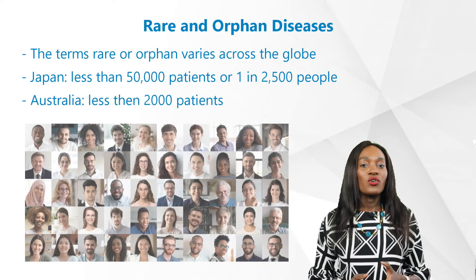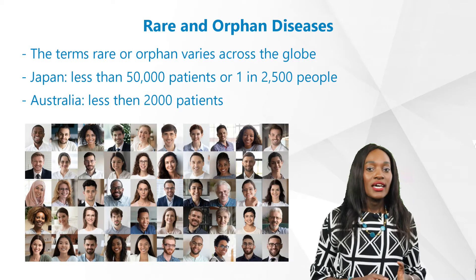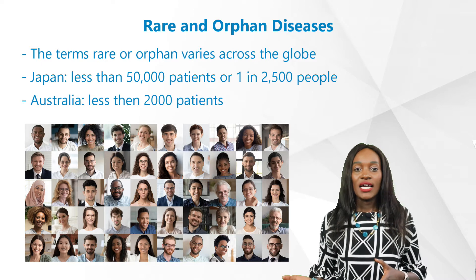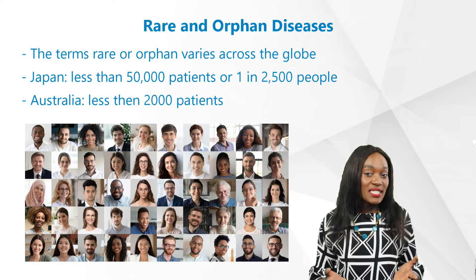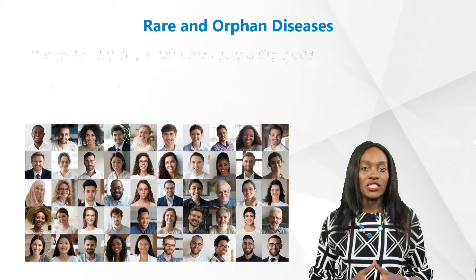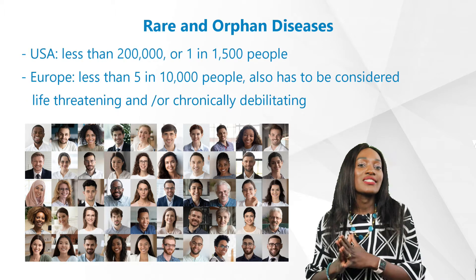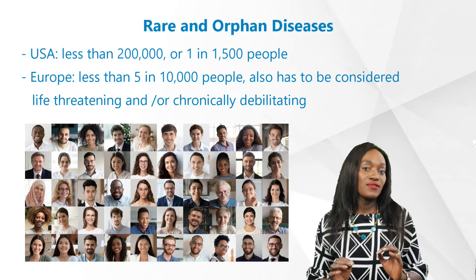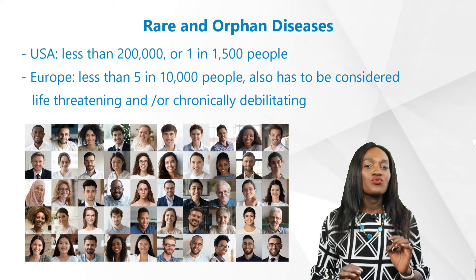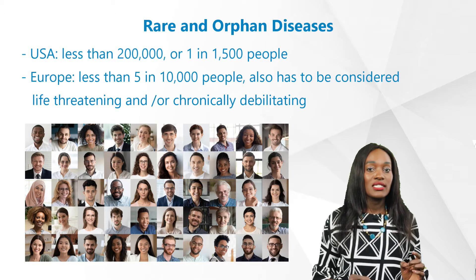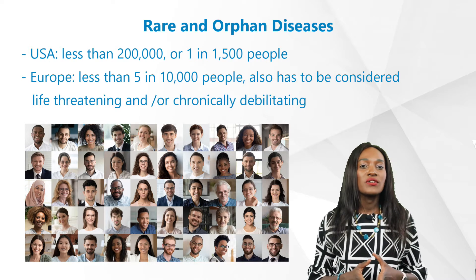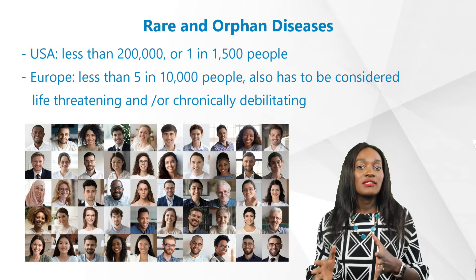When it comes to prevalence, or the number of people living with these diseases or conditions, the definitions of rare or orphan vary across the globe. For example, in Japan a disease is considered rare when it affects less than 50,000 patients or 1 in 2,500 people. In Australia, less than 2,000 patients. In the United States, when it affects less than 200,000 or 1 in 1,500 people. In Europe, however, the European Commission on Public Health additionally defines rare diseases as low in prevalence when it affects less than 5 in 10,000 people, and the disease or condition also has to be considered life-threatening and/or chronically debilitating.